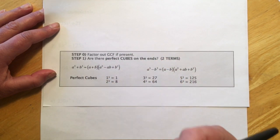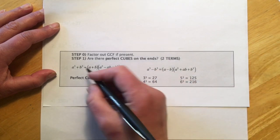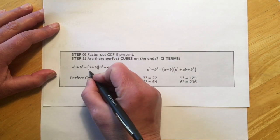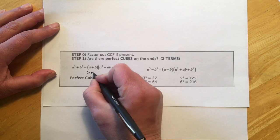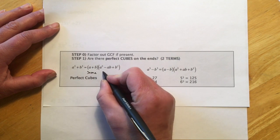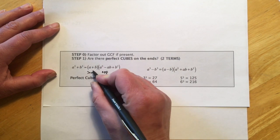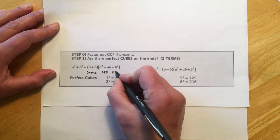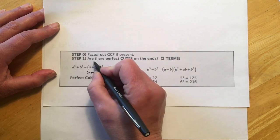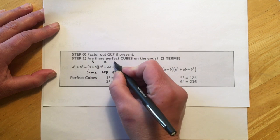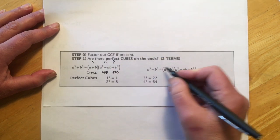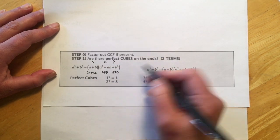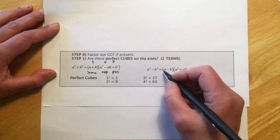The trickier part for me was remembering how to remember the sign changes. And so what I have is that the first sign is always the same as whatever it started as, the second sign is always opposite whatever the first sign was, and the third sign is always positive. So for whatever reason, I can remember same, opposite, positive, S-O-P, but I can't remember the signs. So this is kind of my little trick for doing that.